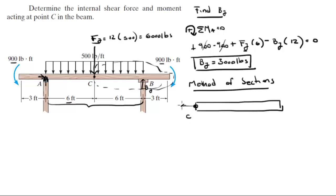So you know that this is C. You know that we have a normal NC, we have a shear VC, and you have a moment MC.